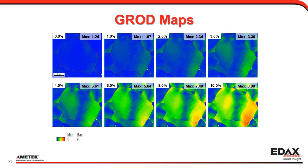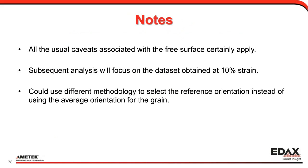Here are the GROD maps — grain reference orientation deviation maps — where we're comparing the orientation at each point relative to the average orientation for the grain. You can see that development quite nicely. Areas in blue are very near the average orientation of the grain and areas in red are quite far away — in this case, almost nine degrees. You can see a band in the center of that large grain at the center of the scan area that's quite close to the average orientation, and then as you move to the left and right, you see rotations away from that average, suggesting the grain is bending away from that central orientation. The usual caveats apply with a free surface — that's what we can do in situ. We can't look in the bulk with EBSD.